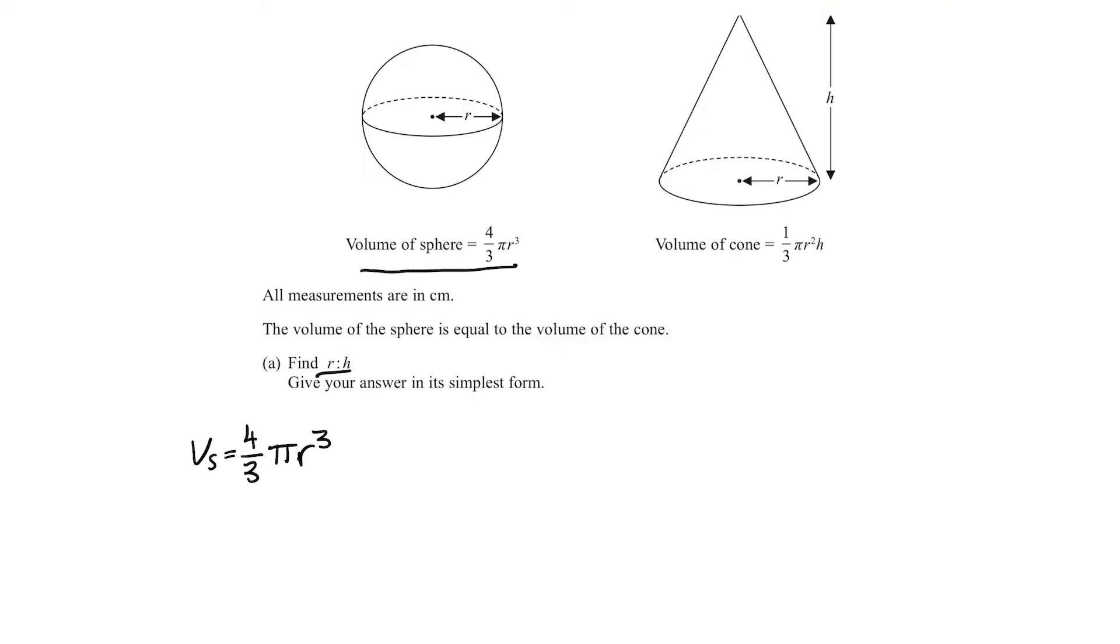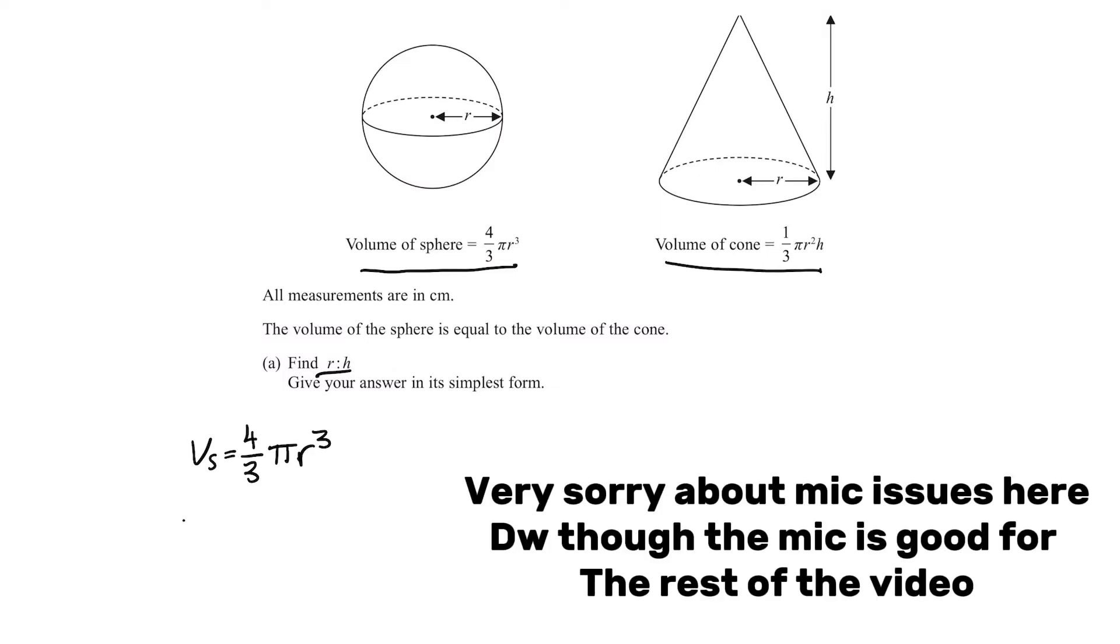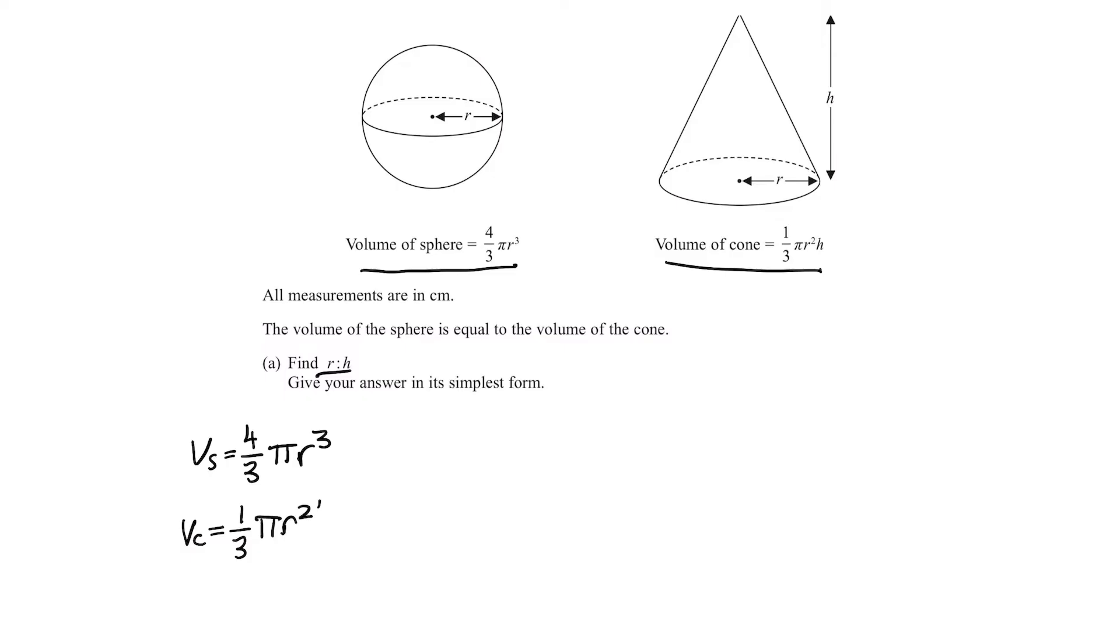I'm just reading off here. Similarly, we can read off for volume of cone. V for volume of cone equals 1/3 pi R squared H. Now we are told these volumes are equal to each other, so we can set these two expressions equal. We want only R and H in this equation, so let's try and simplify this.